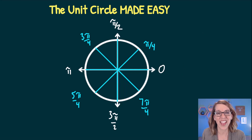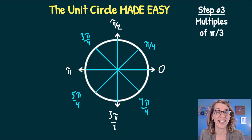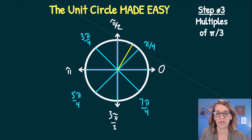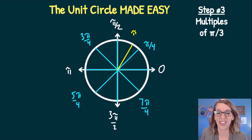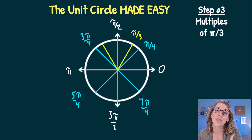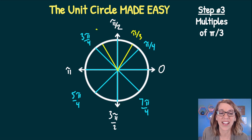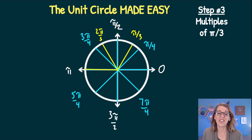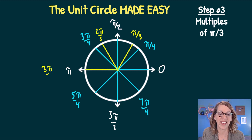Next I'll tackle the 60-degree angles, or pi-thirds. The first 60-degree angle is at pi-thirds. Adding another 60 degrees gives 2 pi-thirds. The next increment would be 3 pi-thirds, which is exactly where we end up — and 3 pi-thirds of course reduces to pi.